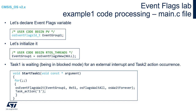Then we can use our newly created Event Flags with the StartTask1 function, which is the entry function of Task1. Within its endless loop, please insert the function which would wait for EventGroup1 to be equal to 0x51. To do this, we will use osEventFlagsWait function. The first argument would be the EventGroup1 handler, and the second one would be the mask we are waiting for — in our case, 0x51.